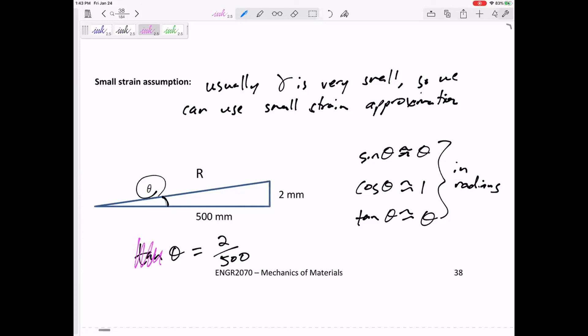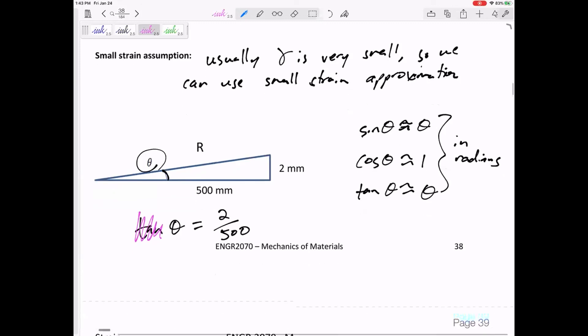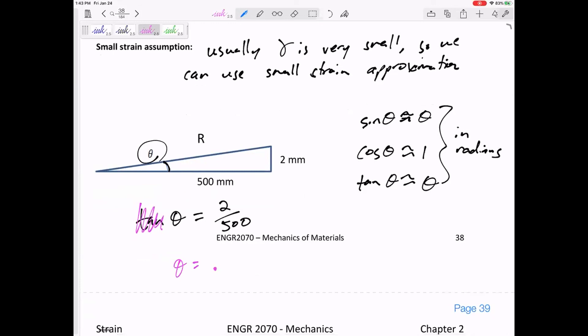So I have an example I'm not going to go through, but if 2 over 500 is equal to 0.004, if we didn't use this, if we went the long route, if we did inverse tangent, if we made sure our calculator was in radians, we would get 0.0039999. And so there's no need to do more math than we need to do.